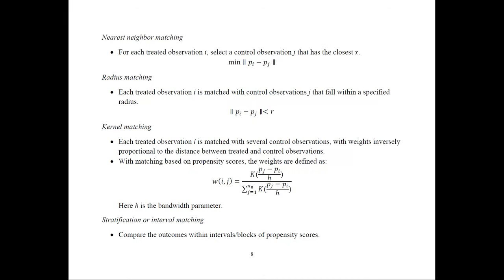For kernel matching, each treated observation i is matched with several control observations where weights w(i,j) are inversely proportional to the distance between the treated and control propensity scores. The weight equals K((pj - pi)/h) divided by the sum of K values over all matched control observations, where K is the kernel function and h is the bandwidth parameter. Stratification or interval matching divides observations into propensity score blocks and compares outcomes within each block.